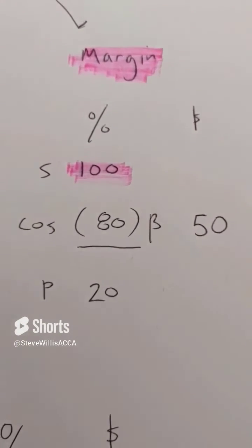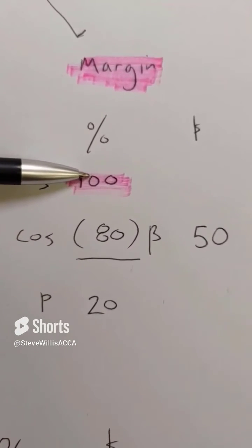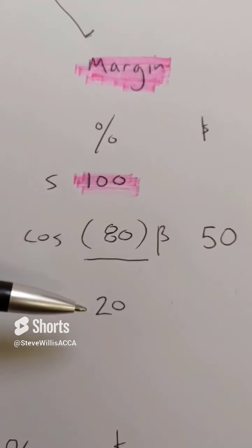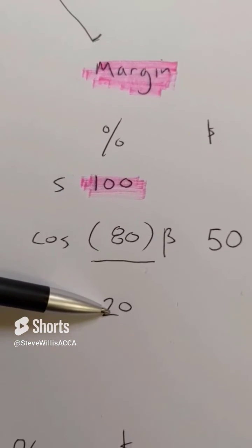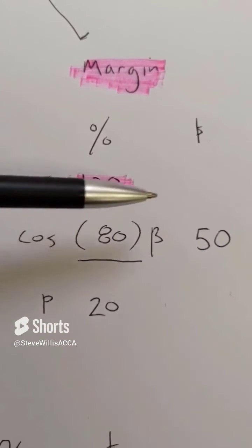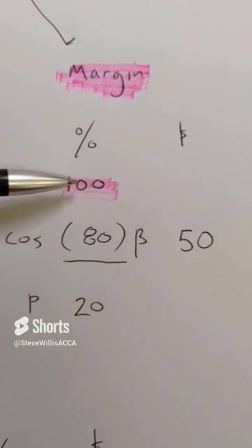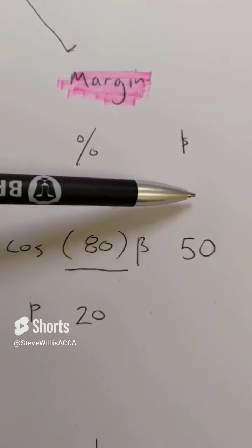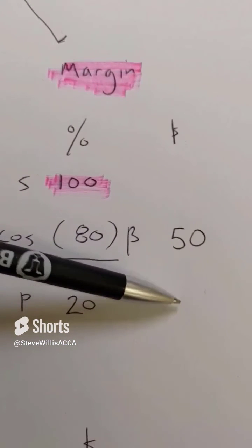For a profit margin, you start with 100% here at the top. 20% is the profit. 80% then, the balancing figure cost of sales. So 50 times 100 divided by 80 gives me this, and same thing down here.